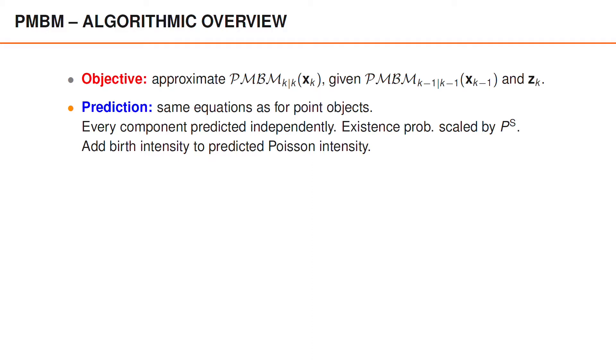This means, for instance, that we can predict every Bernoulli component as well as every component in the Poisson intensity independently of each other. Also, when predicting the Bernoulli components, we scale their existence probabilities with the probability of survival, and so on.